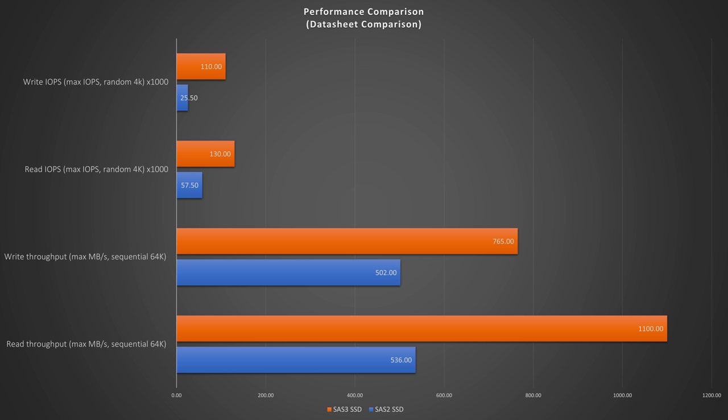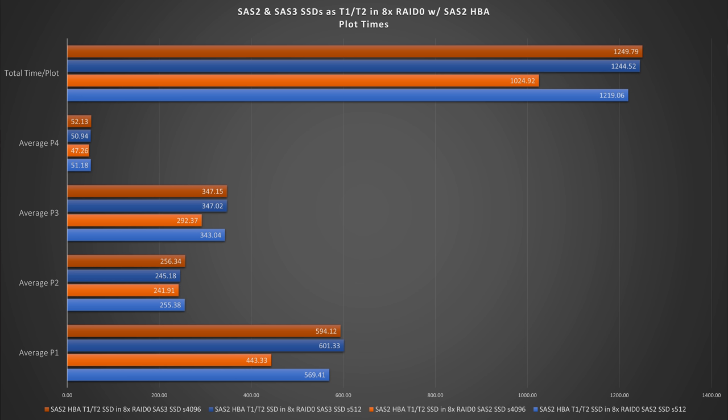So why don't we look at how it went. Looking at the first test series, it's actually slower than the SAS 2, which is kind of odd. Now of course it is a SAS 3 SSD and these tests were done on a SAS 2 HBA, so why don't we find out if it's any faster on a SAS 3 HBA.